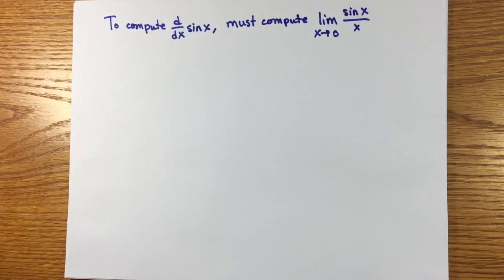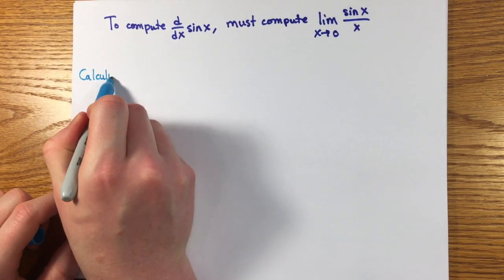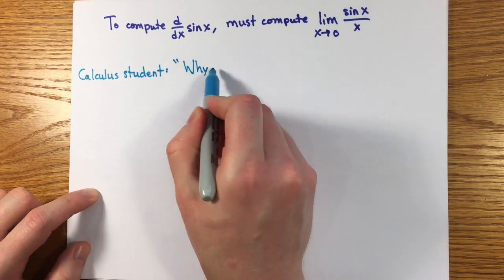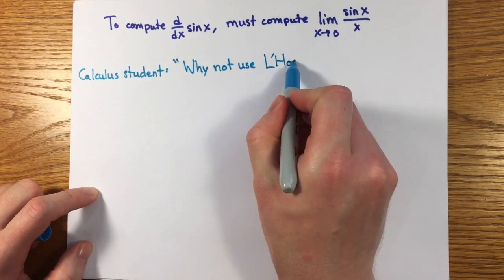Last time, I reduced the problem of computing the derivative of the sine function to the computation of the limit sine x over x as x goes to zero.